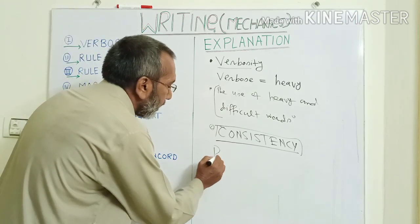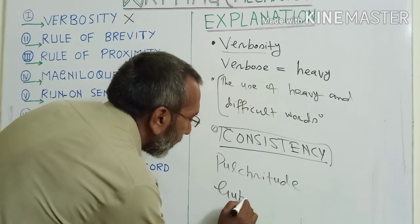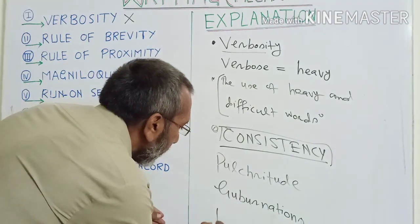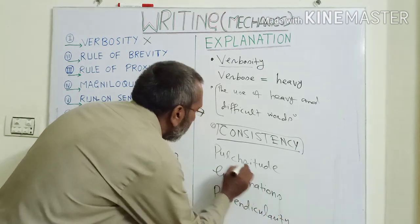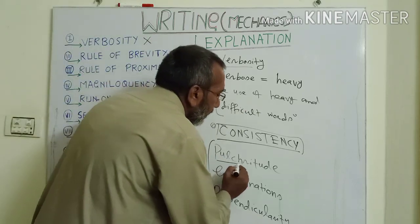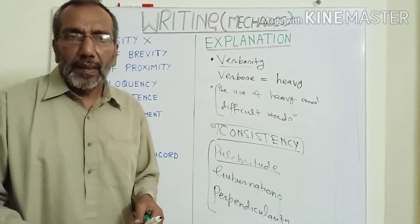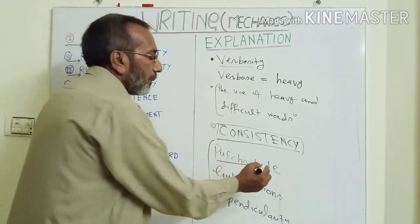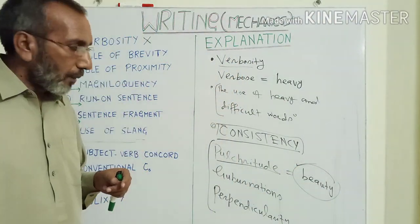But obviously, in routine communication your main target is to communicate, to convey your message. So if the right audience is not being able to understand what you are saying, it becomes a problem. Suppose I use the word 'faultitude' — have you heard this word? Or 'governations.' Or if I say 'perpendicularity.' There is no harm in using these words, but if you use any of these, then your style would automatically become a bit verbose. Faultitude is a heavy word in the sense that perhaps 99% of people might not have even a slight idea of what faultitude means. Faultitude would stand for beauty.